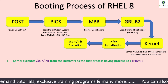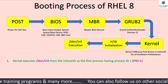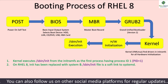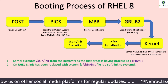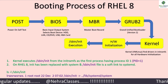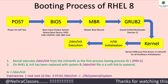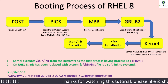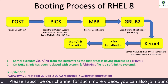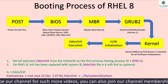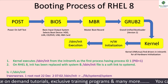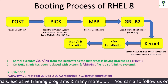The kernel executes /sbin/init from the initramfs as the first process, having process ID 1. On RHEL 8, it has been replaced with systemd and the /sbin/init file is a soft link to systemd. If you run the command ls -l /sbin/init, it will show you that it is a soft link to systemd located in /lib/systemd/system directory. In RHEL 8, systemd is the first process and the parent of all other processes.